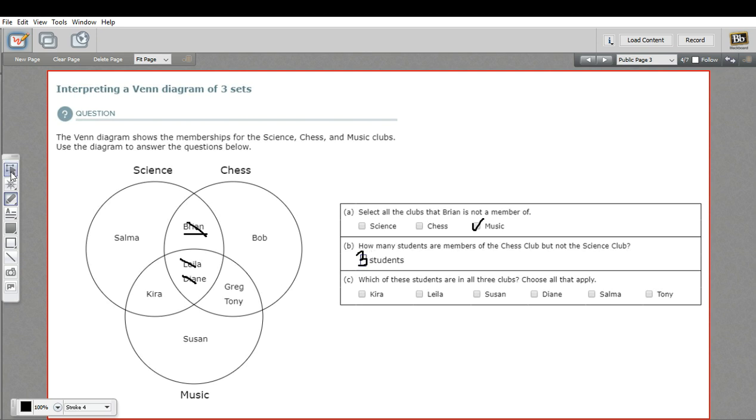All right, and finally, actually, let me just remove my markings here. C says, which of these students are in all three clubs? And I mentioned this middle part. That's the overlap of all three. So it's going to be Leela and Diane. So we'll just check off those two.